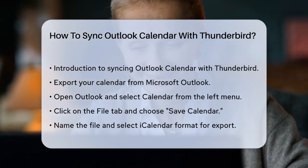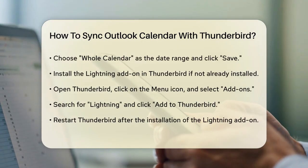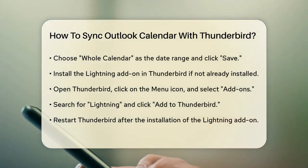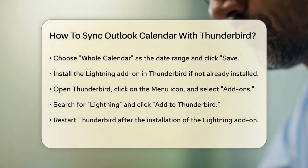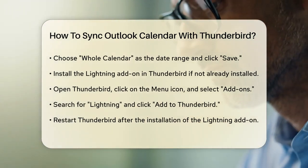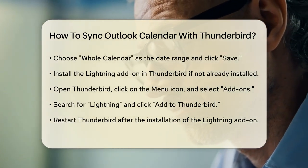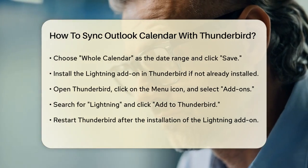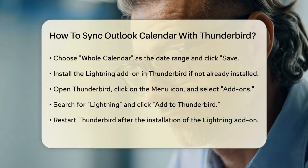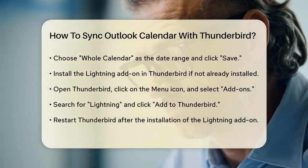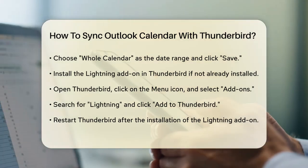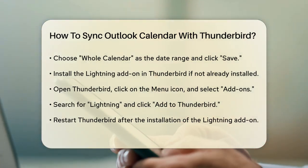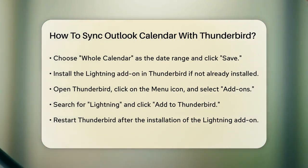Next, you'll need to install the Lightning add-on in Thunderbird if you haven't already. Lightning is a Mozilla Thunderbird add-on that allows you to schedule meetings, tasks, and appointments. To install it, open Thunderbird, click on the menu icon (three bars), select Add-ons, and search for Lightning in the top right-hand search box. Click Add to Thunderbird and restart Thunderbird once the installation is complete.